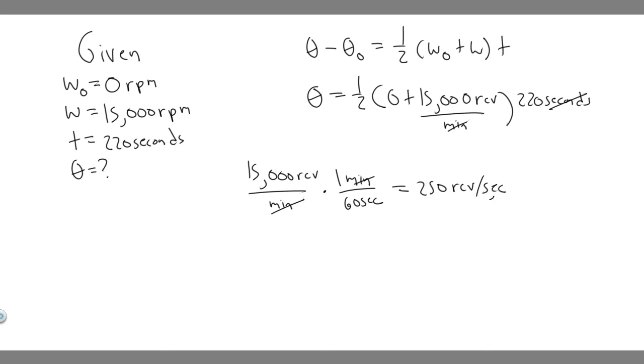And now we've got it like this. What we can do is actually plug it in. So it's going to be equal to one half times 250 plus 0, which is just 250 revolutions per second, multiplied by 220 seconds. So now you'll notice that those cancel, and then we just have to do 250 times 220. And if you do that, you're going to get 55,000, and then multiply that by one half.